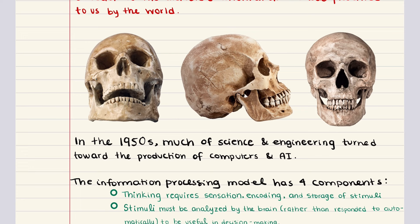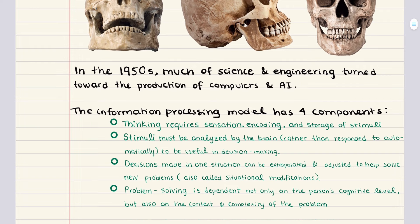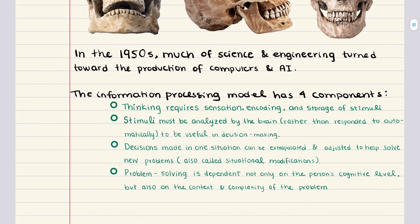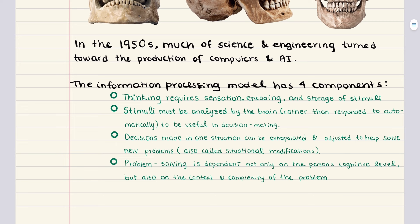The human brain is not a computer. While this analogy creates a simple paradigm, it doesn't tell the whole story. The human brain handles not just facts but also emotion, sensations, and memories. The information processing model is a framework used by cognitive psychologists to explain the processes of the human brain, and it has four key components. The first is that thinking requires sensation, encoding, and storage of stimuli.